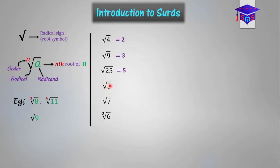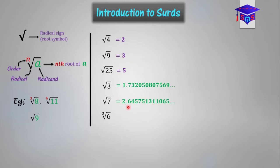And then the square root of 3, on the other hand, is giving you a string of numbers — 1.732050 — in fact it continues to infinity, it never ends. Remember in the previous session we talked about irrational numbers, which are non-terminating and non-recurring. Root 3 is non-terminating and non-recurring, so it's an irrational number. Root 25, root 9, and root 4 are rational numbers. Root 7 also gives a non-terminating and non-recurring decimal, so it's also an irrational number.